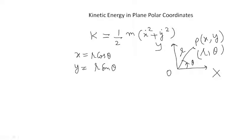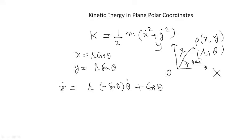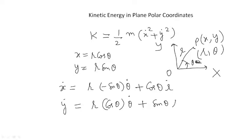So here your kinetic energy can be written in terms of the polar coordinate system. First you have to differentiate x with respect to time. So x dot equals r dot cos theta minus r sin theta times theta dot. Similarly, y dot equals r dot sin theta plus r cos theta times theta dot.